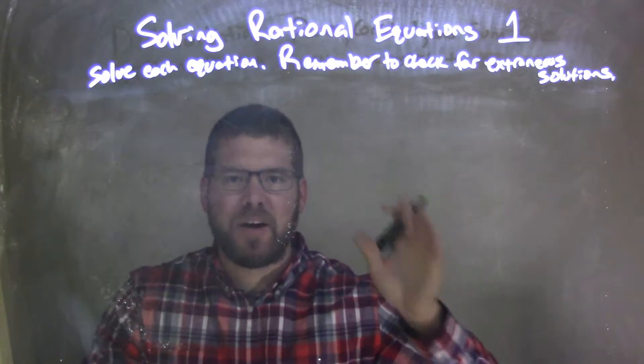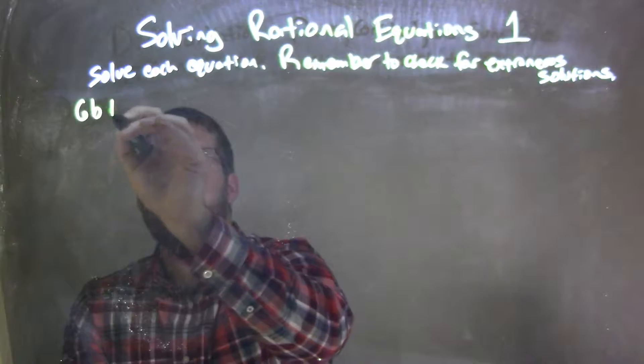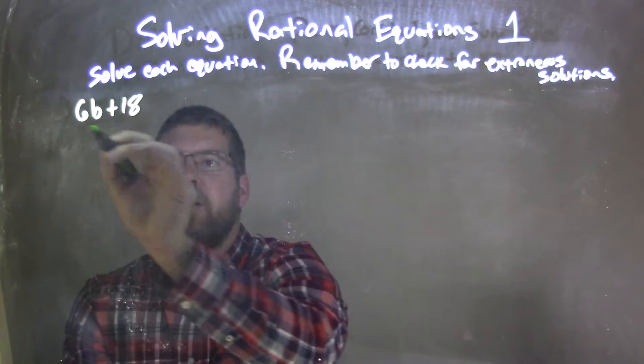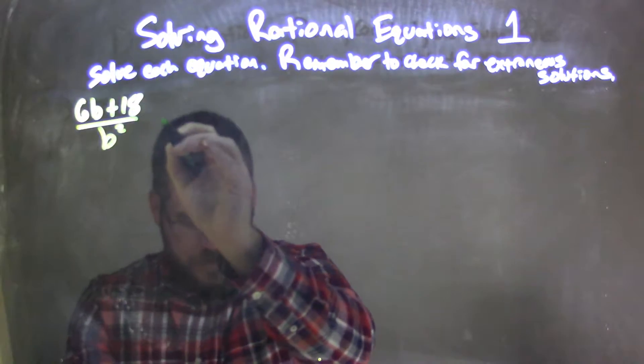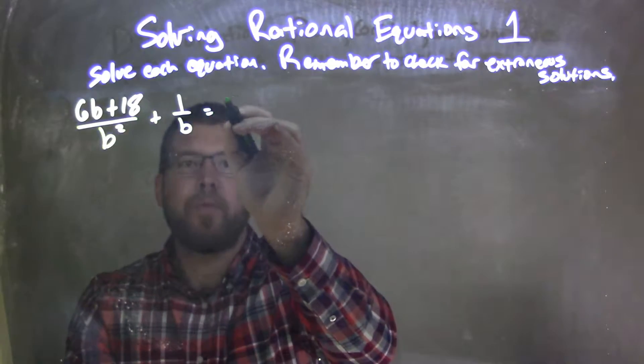I'm going to solve each equation, and remember to check for extraneous solutions. So if I was given this equation: 6b plus 18 over b squared plus 1 over b equals 3b.